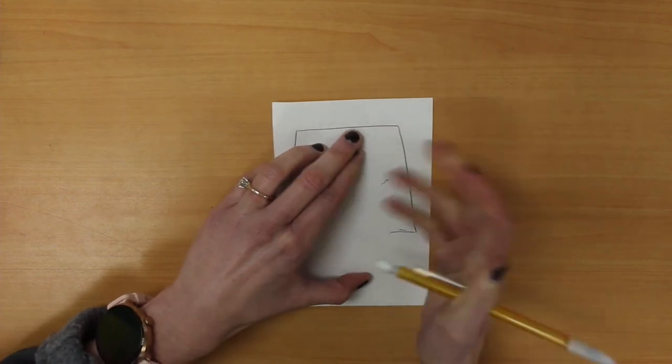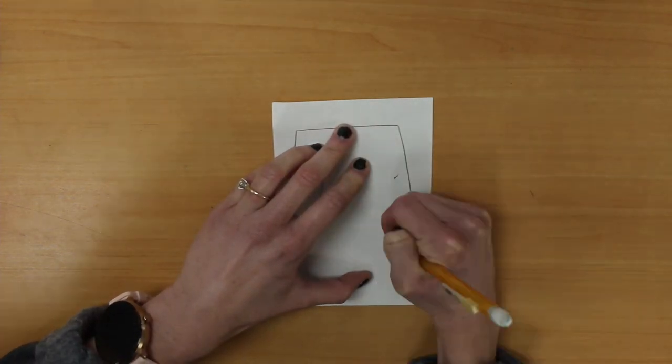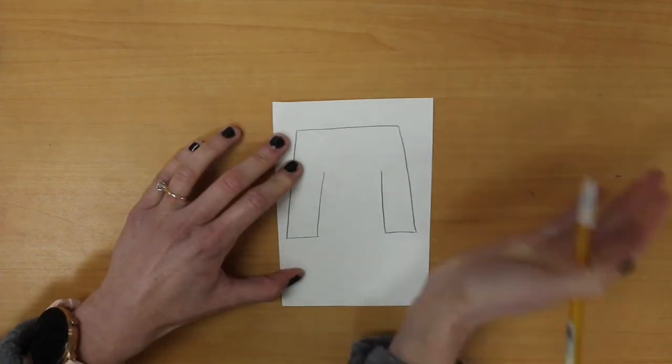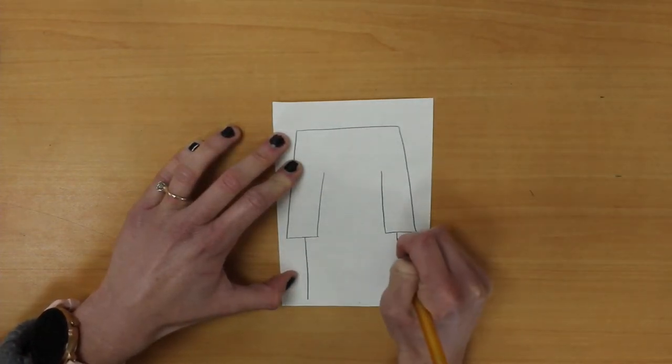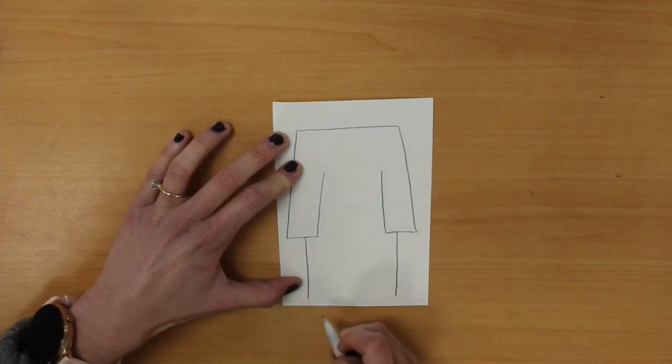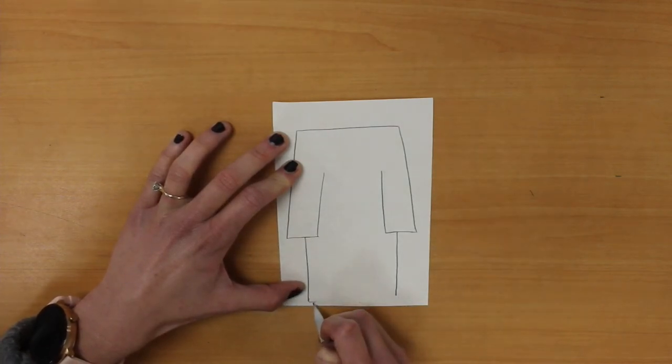Now we need to think about drawing our bottom of our kimono. So go ahead, start about the middle of the bottom of your sleeves. Again, vertical lines down and then we're going to connect them down at the bottom. Fabulous. We now have the basic shape of our kimono.